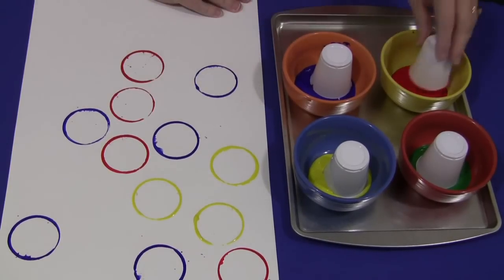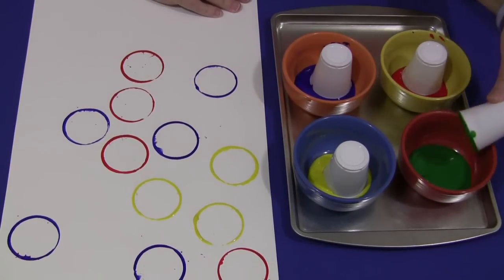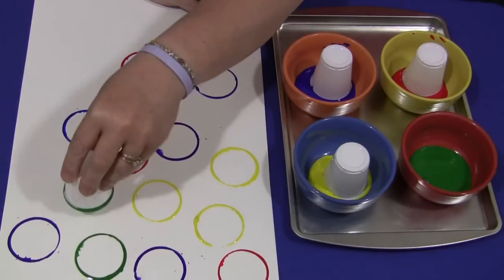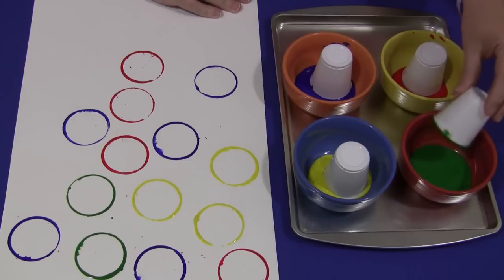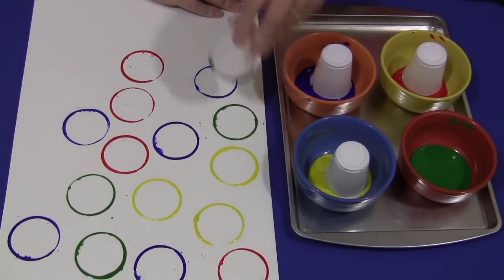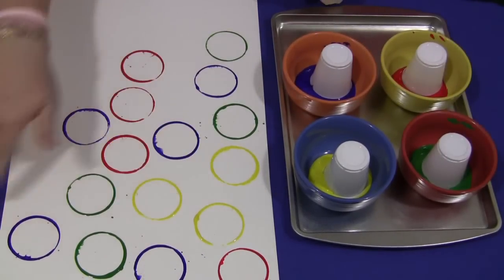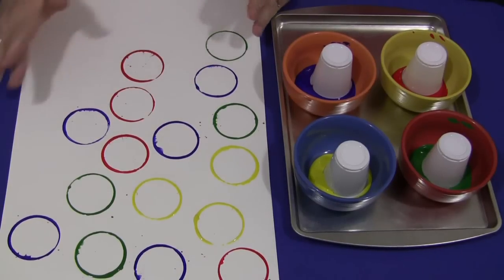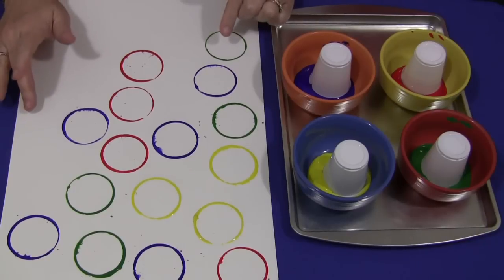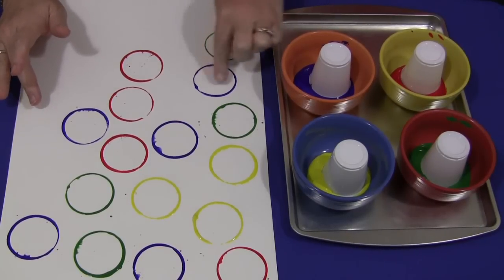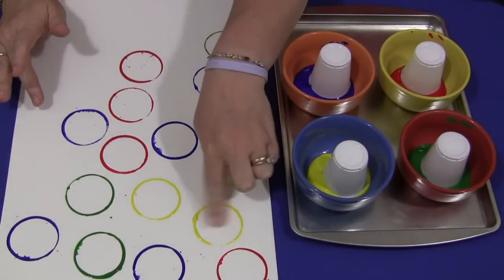After they've filled their whole sheet of paper, an extension you can do with this activity would be to count how many circles they made with their plastic cups. They would go through and count how many they made. If they wanted, they could dip their fingers in the paint and fill in each circle with paint.